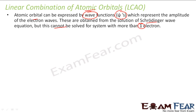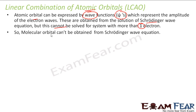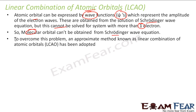It can be solved only for a system that has one electron. So the molecular orbital cannot be solved from the Schrödinger wave equation, because it has more than one electron. So what should we do? To work on this, the LCAO — linear combination of atomic orbitals — has been adopted. This is the approximation method.